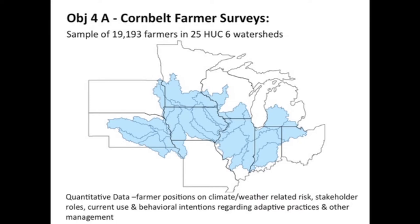This CAP project has a fairly significant socioeconomic thrust. There are two major data collection activities: one is some Corn Belt-wide farmer surveys that J.R. Buckle is going to talk about in detail tomorrow. We're going to have a significant amount of data that we're treating quantitatively — data about farmer positions on climate and weather-related risk, stakeholder roles, current use, and behavioral intentions towards certain kinds of practices.